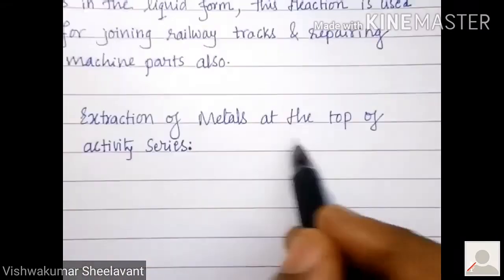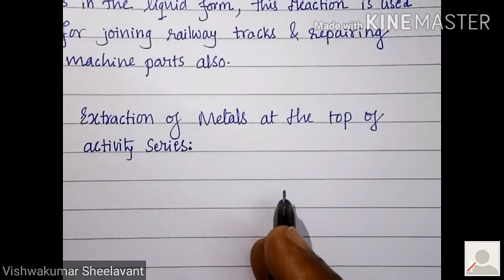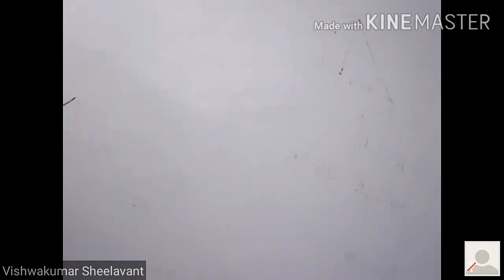You know that metals at the top of activity series are highly reactive in nature and they readily react with oxygen. They show very high affinity towards oxygen than any other elements in nature. So if we have oxide of the metals, it is very difficult to reduce them by using carbon, pure carbon, what we call it as coke.